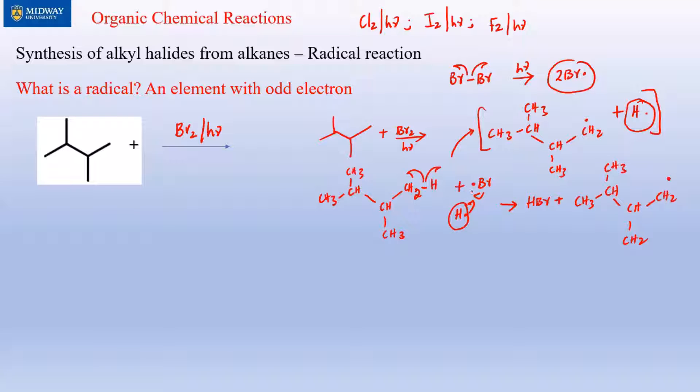We produced two Br radicals. Only one reacted initially to grab this hydrogen from the molecule, which means there's still one more Br left. The second Br radical reacts using half arrows, producing an alkyl halide where the Br is attached to this CH2.